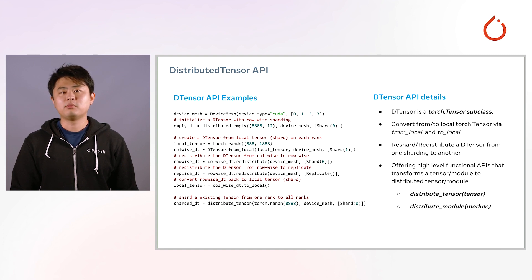We can convert from or to local PyTorch tensors on each rank. We can re-shard or redistribute a D-tensor from one type of sharding to another. We also offer a high-level API to shard and scatter an existing tensor from one rank to all other ranks.